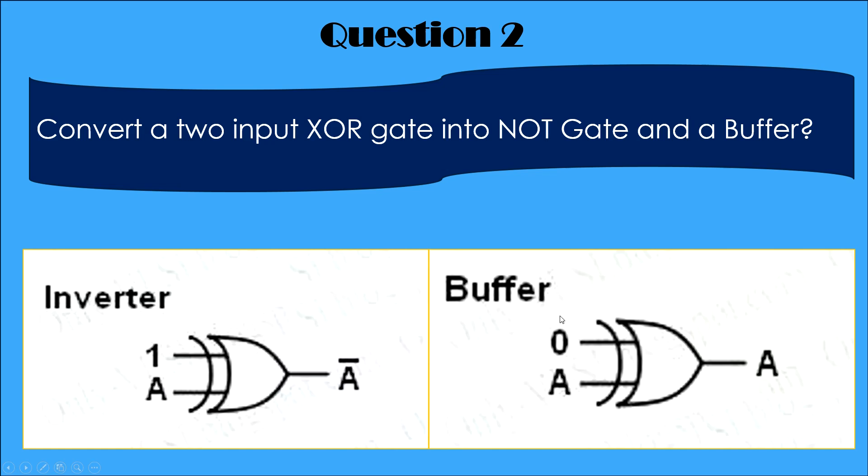Similarly, if you want to convert the XOR gate into a buffer, tie its one of input to 0. So on the second input, when you will give 0, you will get 0 at the output.